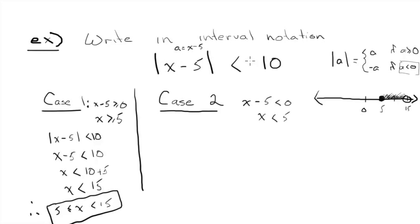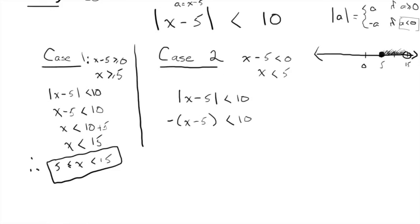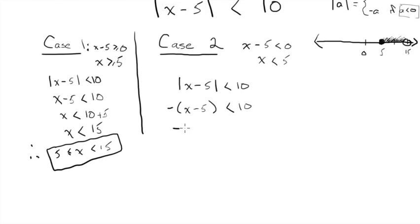Now, looking at the interval or the inequality we were given, because we're in case 2, because this thing is a negative, the absolute value of A becomes negative A, so it will be negative of x minus 5 is less than 10. So let's expand this bracket, negative x plus 5, less than 10, means negative x less than 10 minus 5, negative x less than 5.